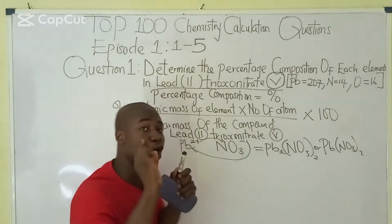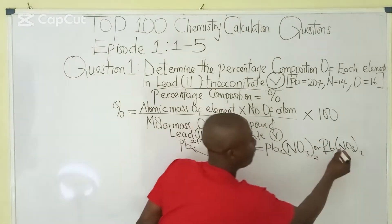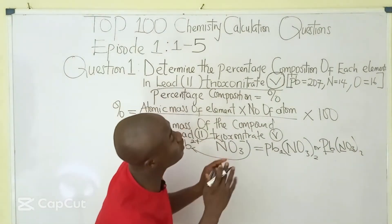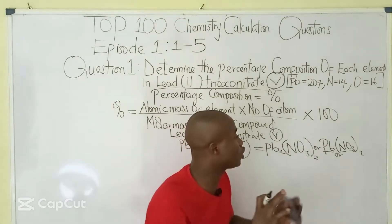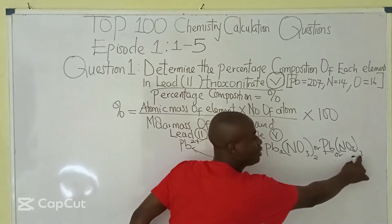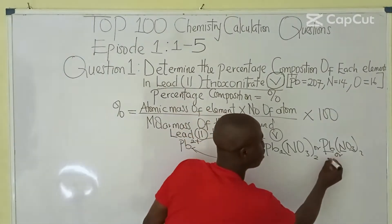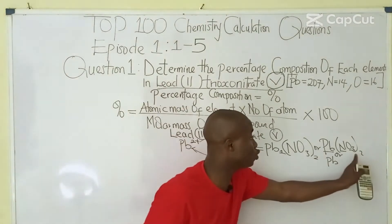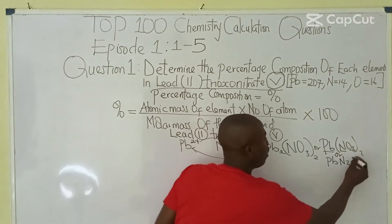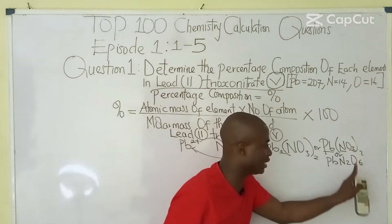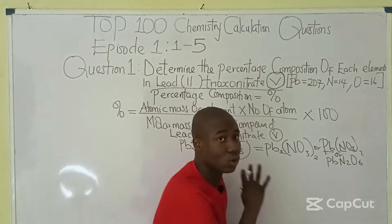How do we solve the percentage composition of each element in this compound? The elements that make up this compound are Pb, nitrogen, and oxygen. I would prefer bringing this compound to its lowest term. The subscript 2 outside the bracket affects everything inside: Pb stays, 2 times N gives N₂, and 2 times O₃ gives O₆. So the expanded form is PbN₂O₆.